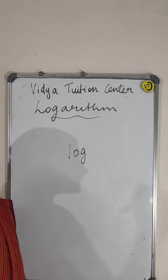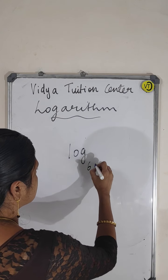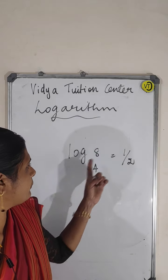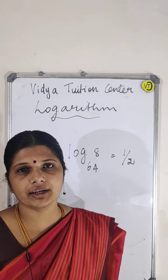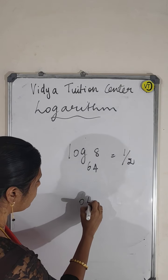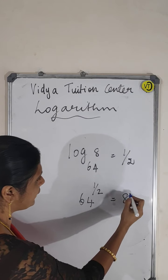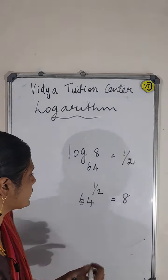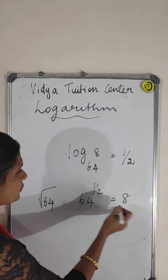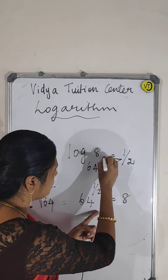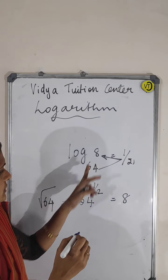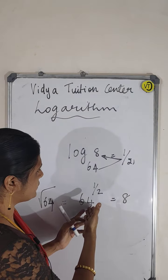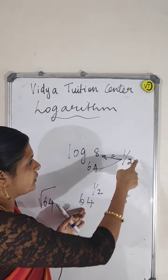Log 64 base 8 is equal to 1 by 2. How can I write this in exponential form? 64 to the power of 1 by 2 is equal to 8. Am I right? 64 to the power of 1 by 2 is 8, because root 64 is 8. So 64 to the power of 1 by 2 is equal to 8 — this is the relation.